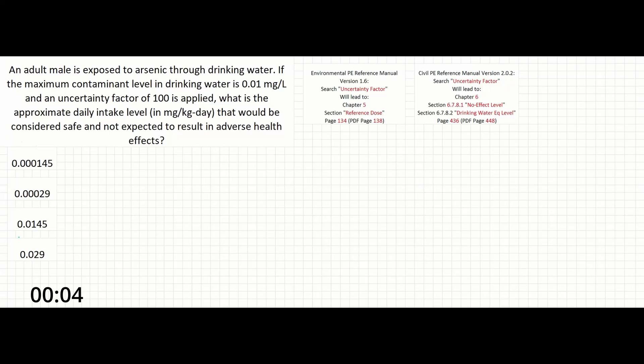In this problem, an adult male is exposed to arsenic through drinking water. If the maximum contaminant level in drinking water is 0.01 milligrams per liter and an uncertainty factor of 100 is applied,